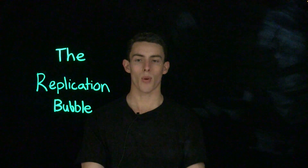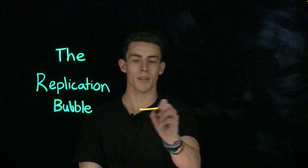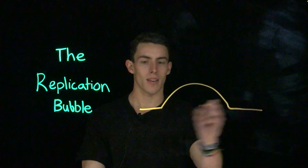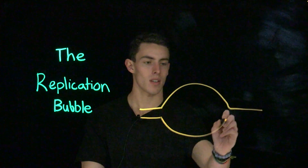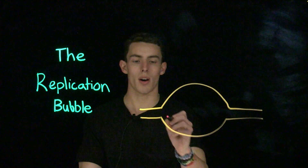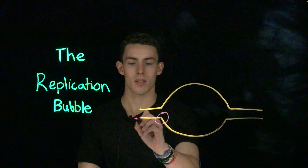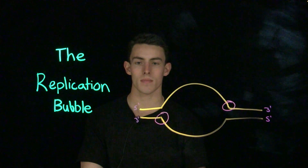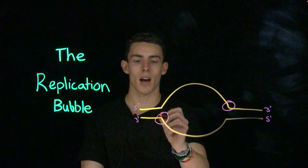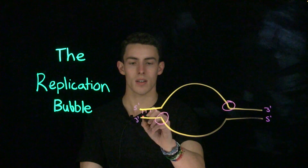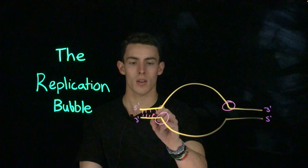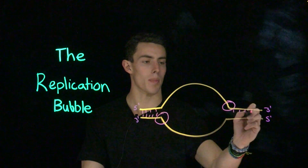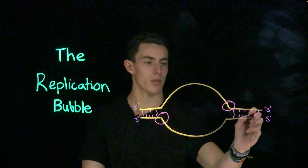Now let's talk about the replication bubble. Before we can actually form a replication bubble, we need a very important enzyme called DNA helicase. DNA helicase will often sit on the lagging strand and support the unwinding of DNA to further the creation of a replication bubble upstream and downstream.